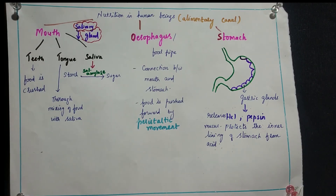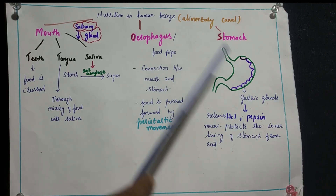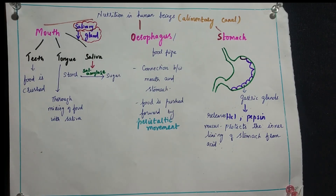Pepsin helps convert protein — which is a complex structure made of polypeptides (long chains of amino acids linked together) — first into dipeptides and finally into amino acids. This is a stepwise process that happens in the stomach. After this digestion, the food enters the small intestine. Digestion takes place only up to the small intestine; when it reaches the large intestine, no further digestion takes place.